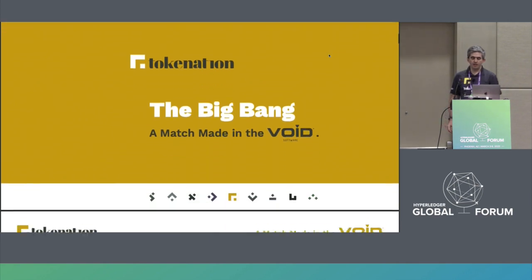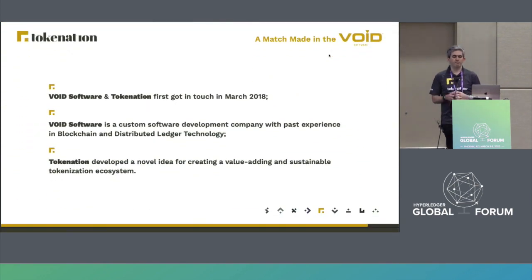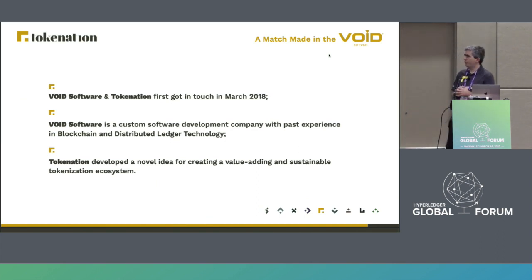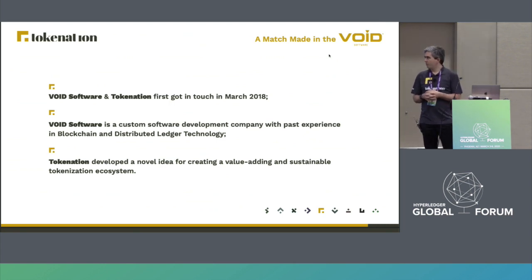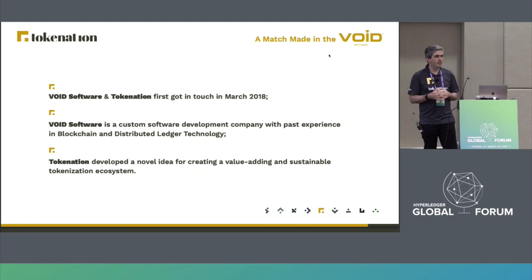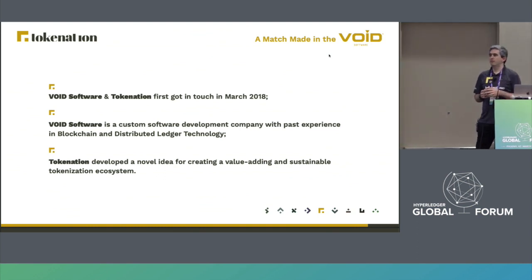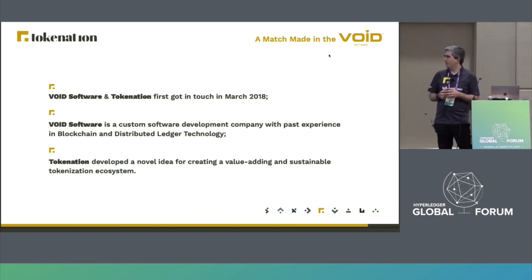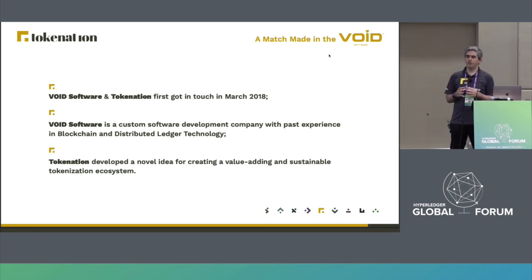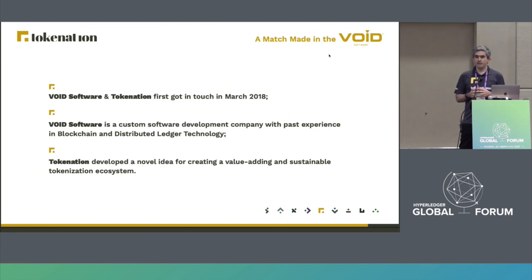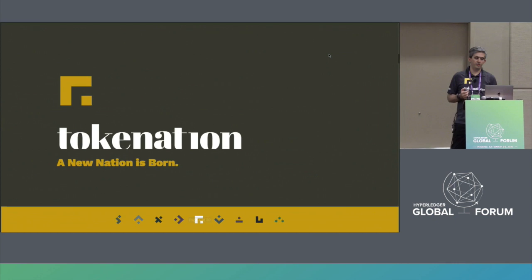Tokenation and Void started collaborating in March 2018, a couple of years ago, when we were approached to try to come up with a technical solution for their project. We brainstormed together a lot, going back and forth with many possibilities. Basically, Tokenation had developed a novel idea in terms of creating a new platform for a whole new tokenization ecosystem, but they needed a technical solution that would support their expectations and objectives.